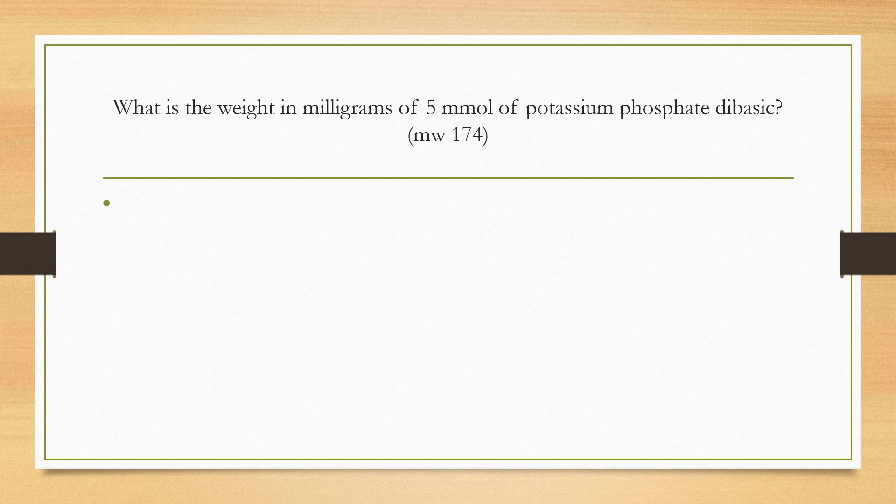Okay, so right now I would like all of you to try and solve this problem and let me know your answer in the comments below. Okay, so we know that one millimole of that substance is 174 milligrams. They're asking us for the weight of 5 millimoles. Again, you can solve this using ratio and proportion. If you know 1 millimole is 174 milligrams, then for 5 millimoles, you can find X and that will give you the weight in milligrams. So try to solve this. Let me know what your answer is.